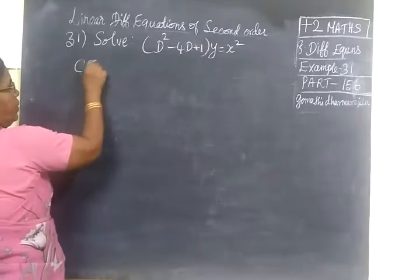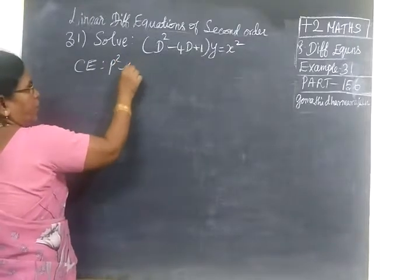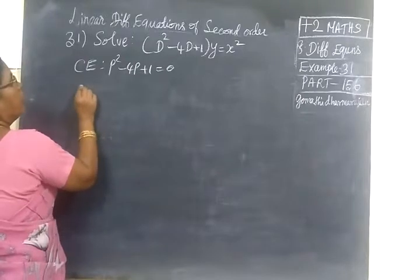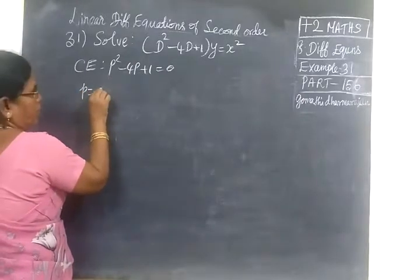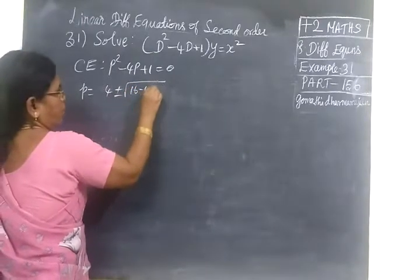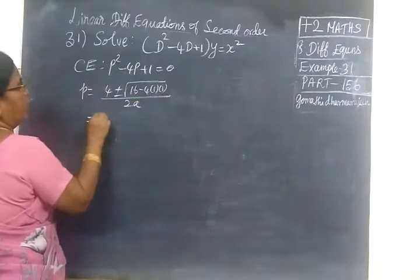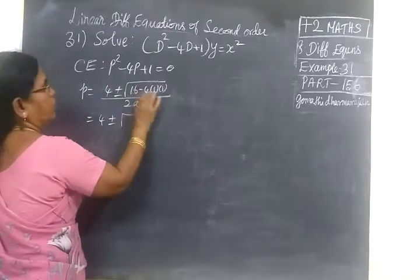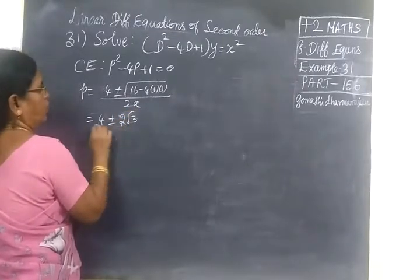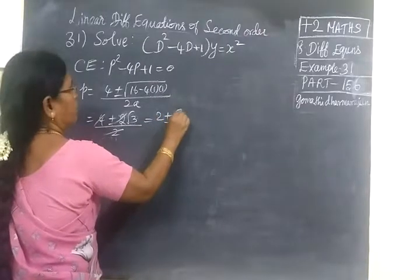Now write the complementary equation, or characteristic equation: P squared minus 4P plus 1 equals 0. So P equals minus P plus or minus root of P squared minus 4A divided by 2A. So 4 plus or minus root of 16 minus 4, which gives 2 root 3 divided by 2, equal to 2 plus or minus root 3.